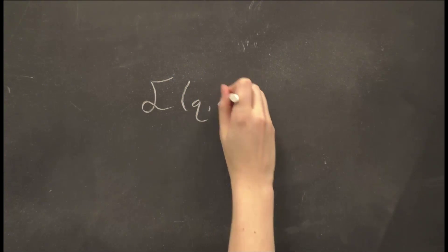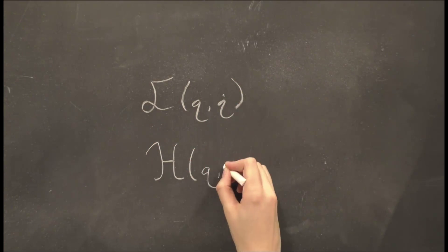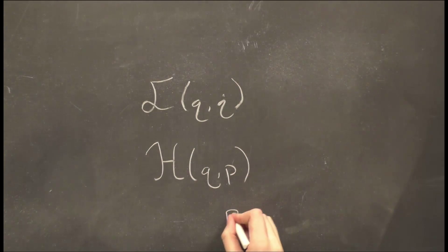Also, in Hamiltonian mechanics, we write H in terms of Q, the parameter of interest, and P, the generalized momentum, given by dL dQ dot.